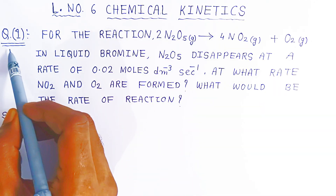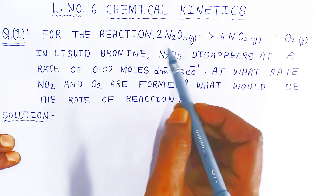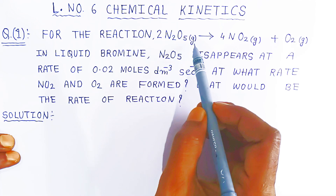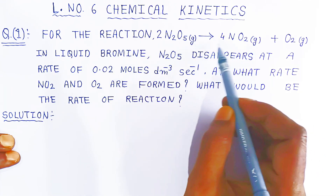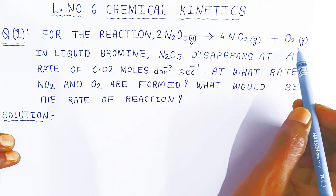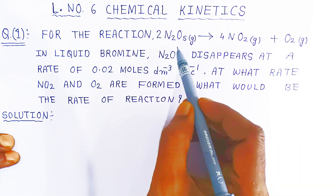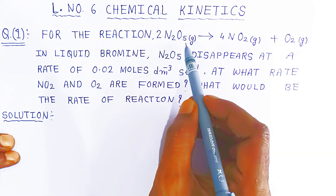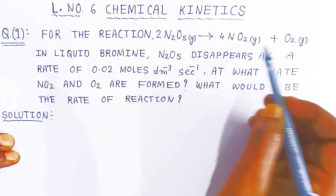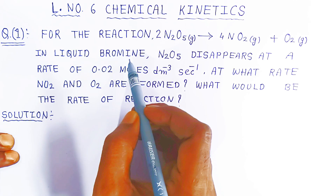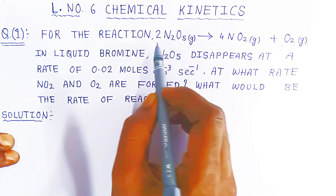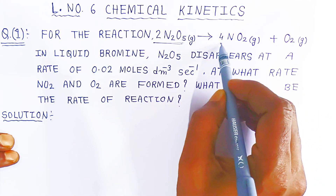The first question is for the reaction: 2 moles of nitrogen pentoxide gas will dissociate to form nitrogen dioxide gas and oxygen gas. This reaction takes place inside liquid bromine. Nitrogen pentoxide is the reactant and nitrogen dioxide and oxygen are the products.